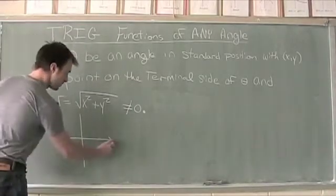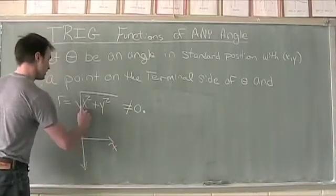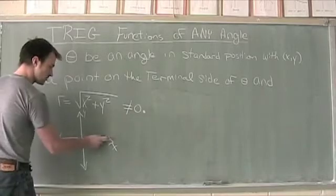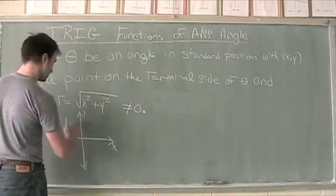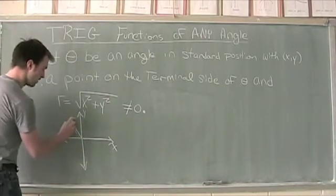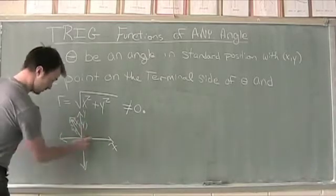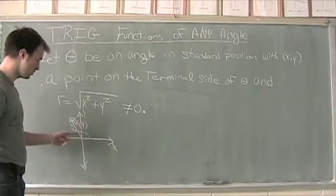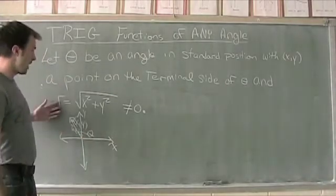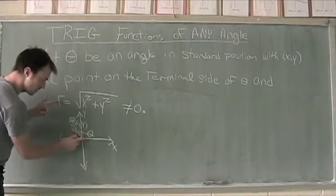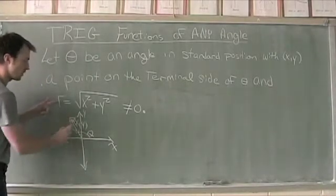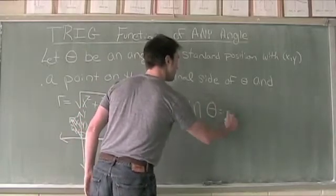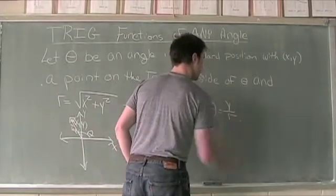With the point (x, y) as a point on the terminal side of theta, the r value — our radius value — is equal to the square root of x squared plus y squared, and r is not equal to zero. Here on the Cartesian plane, the initial side is on the x-axis and theta is measured from the initial side to the terminal side. The r value is the distance from the origin (0, 0) out to the point (x, y). The sine of theta is equal to y divided by r.